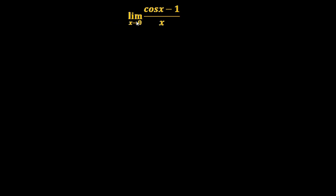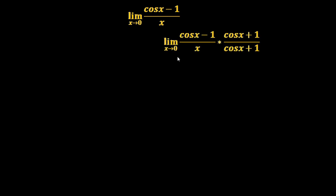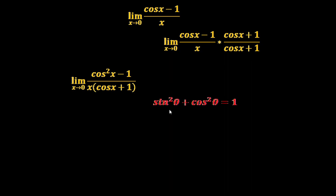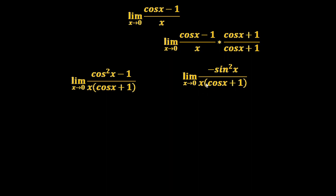Using this result, let us evaluate limit X tends to 0 of (cos(X) − 1)/X. If we multiply both numerator and denominator by (cos(X) + 1), it is in the form of (A − B)(A + B), giving us (cos²(X) − 1) by X(cos(X) + 1). Using the identity sin²(θ) + cos²(θ) = 1, cos²(X) − 1 becomes −sin²(X).